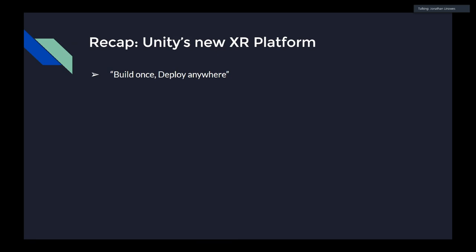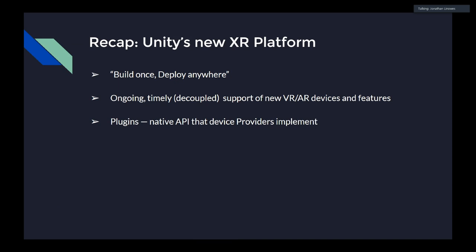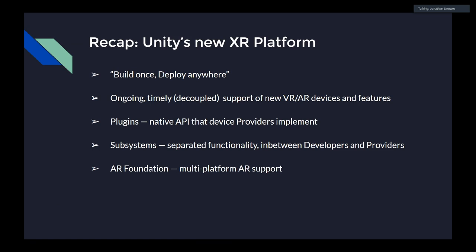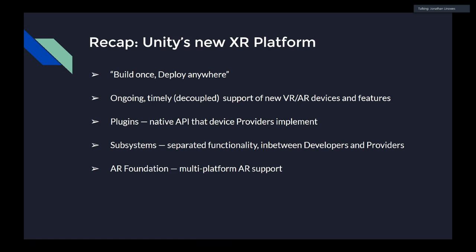To summarize: the XR platform is consistent with Unity's build-once, deploy-anywhere approach. It provides ongoing — or at least decoupled — support for new devices and features, which the OpenVR plugin announcement today demonstrates. The XR plugins provide a native API that device providers can implement. The subsystems divide the functionality into logical sets that sit between developers and providers. On top of that we have the toolkits — AR Foundation for AR and the XR Interaction Toolkit for interactions.